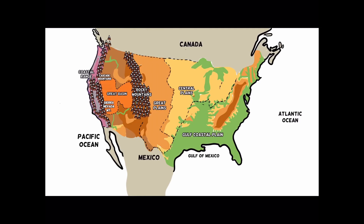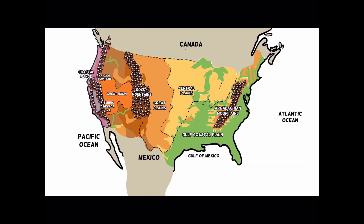The eastern part of the United States is dominated by the Appalachian Mountains, which are around 480 million years old. This system of mountains runs from New England down to Georgia. The Pacific Ocean borders the west coast and the Atlantic Ocean borders the east coast. There are several peninsulas, barrier islands, and archipelagos along the east coast. One of the most famous peninsulas is Cape Cod in Massachusetts. Another important feature is the Chesapeake Bay, located in the Mid-Atlantic region, running along the coast of Maryland and Virginia and serving as an important area for seafood production.